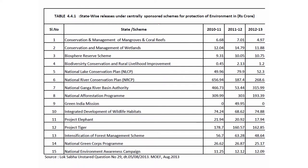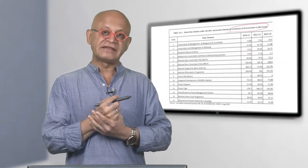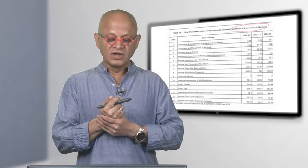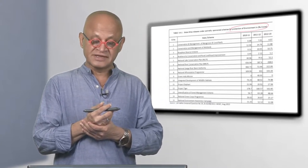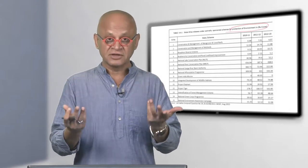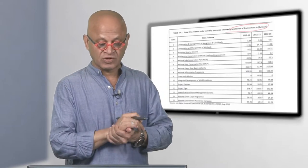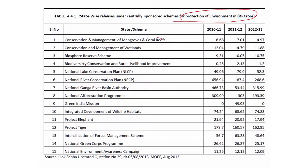State wise release under centrally sponsored schemes of protection of the environment in crores of rupees. There are many programs since 1980 tracking the diversion of forest land to other use. This involves conservation and management of mangroves and coral reefs, wetlands, biosphere reserve schemes, biodiversity, lake conservation plans. Green India mission had a spike of funding in 2012.